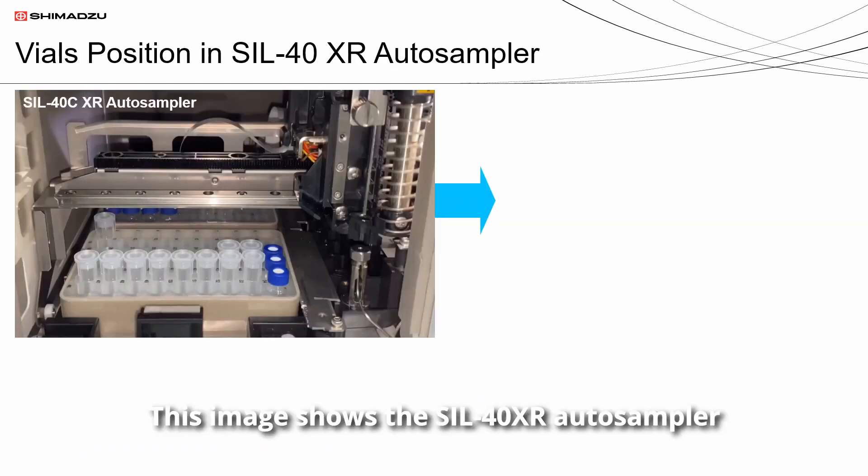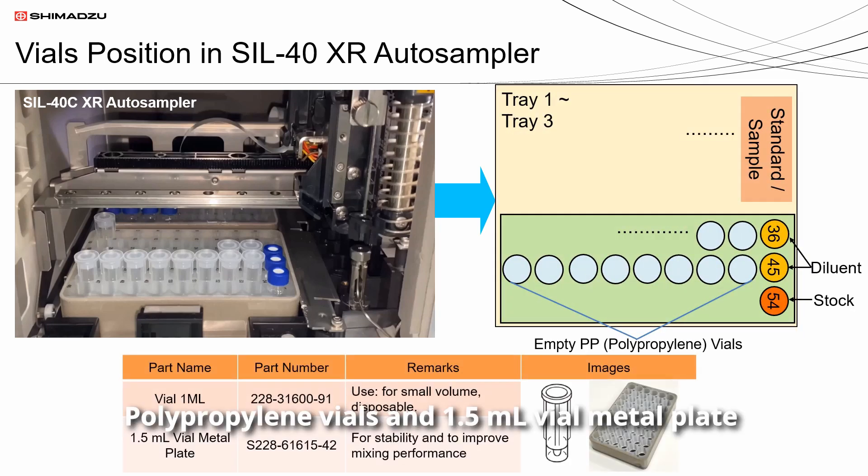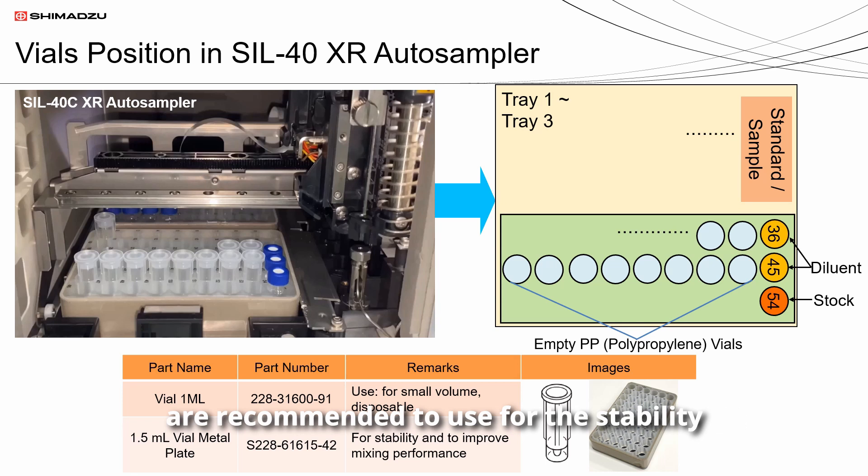This image shows the SIL-40 CXR autosampler and the vials position. Polypropylene vials and 1.5 mL vial metal plate are recommended to use for stability and improved mixing performance during the automated dilution.